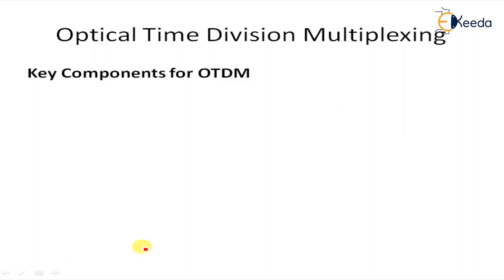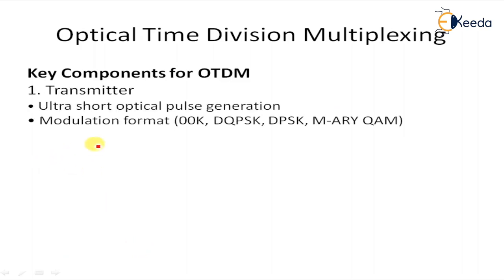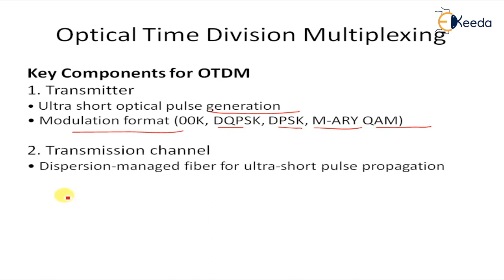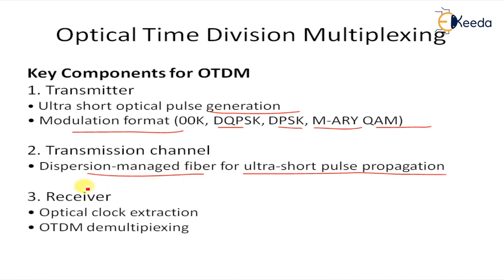The key components of OTDM: First, transmission — ultra-short optical pulse generation is used for the transmission format, and various modulation formats are used such as OOK, DQPSK, DPSK, and QAM (quadrature amplitude modulation). Second, the transmission channel — dispersion managed fiber for ultra-short pulse generation is utilized in the OTDM system. Third, the receiver — optical clock extraction and OTDM demultiplexing are used. These are the three main components of the OTDM system.